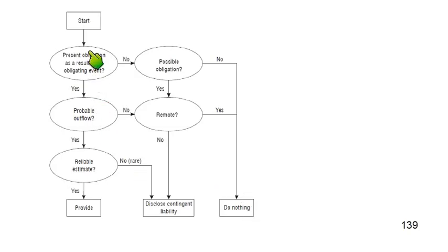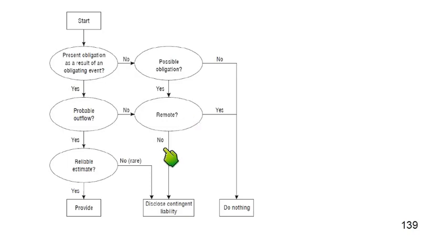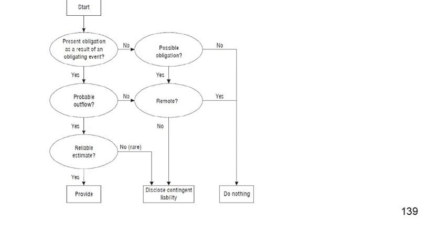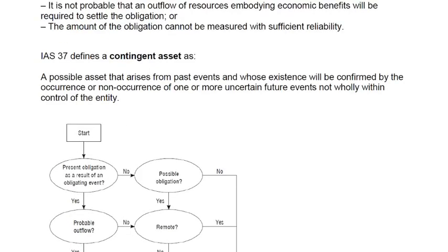If there is no present obligation, there may be a possible obligation. If a possible obligation exists and the chances are remote (around 5 to 10%), we need not do anything. If the chances are more than remote — between 10% and 50% — it is disclosed as a contingent liability. So students should now be able to differentiate between when to book a provision and when to disclose a contingent liability.